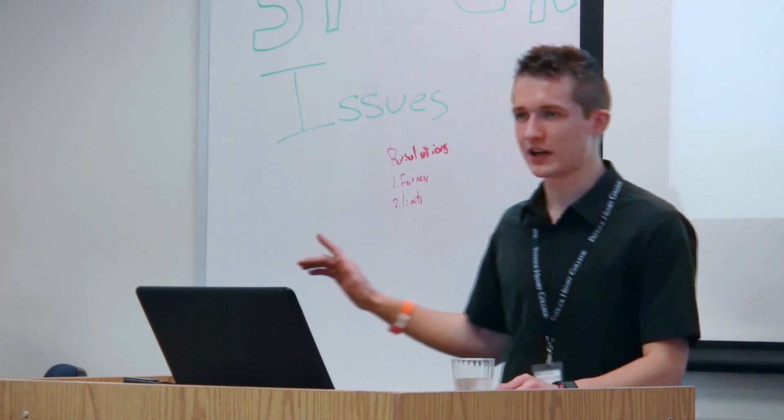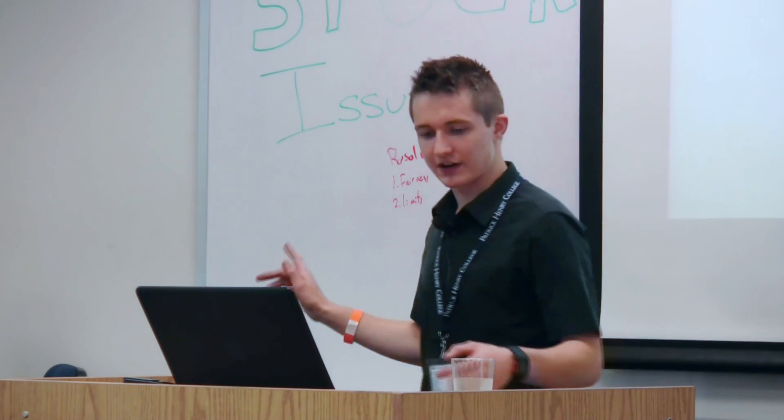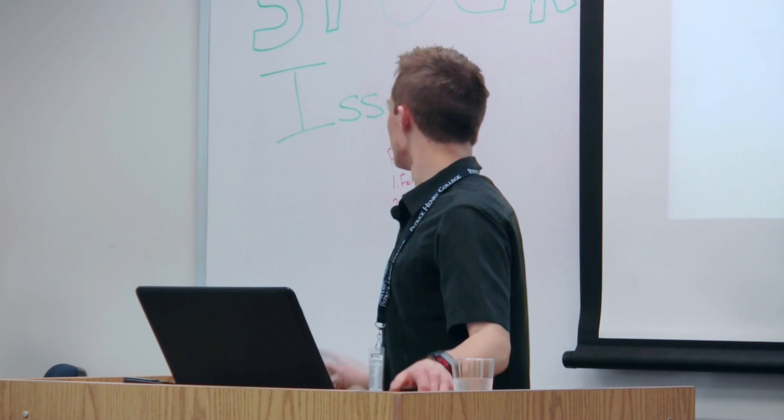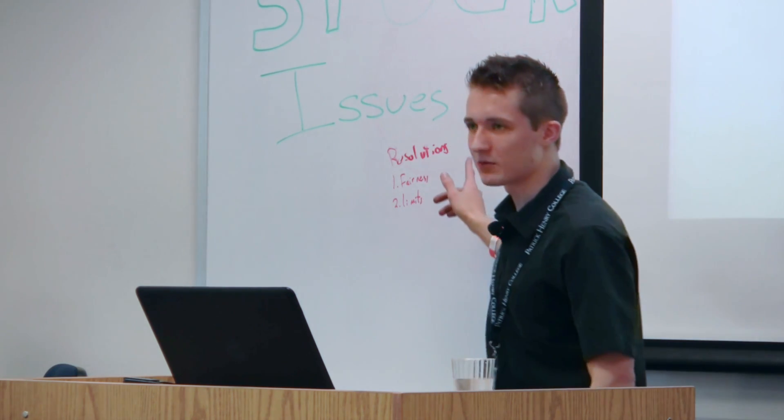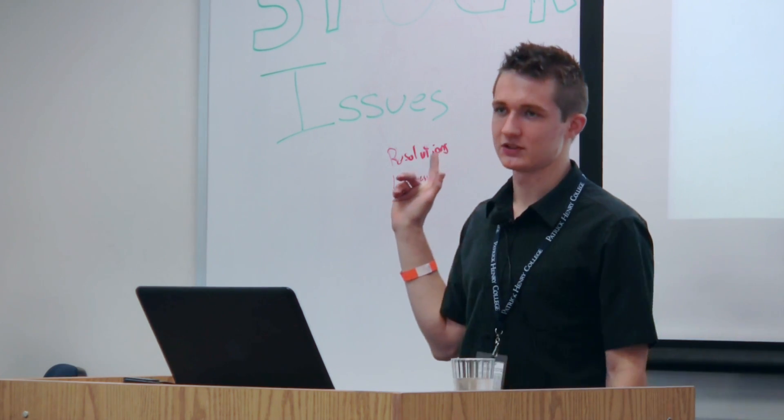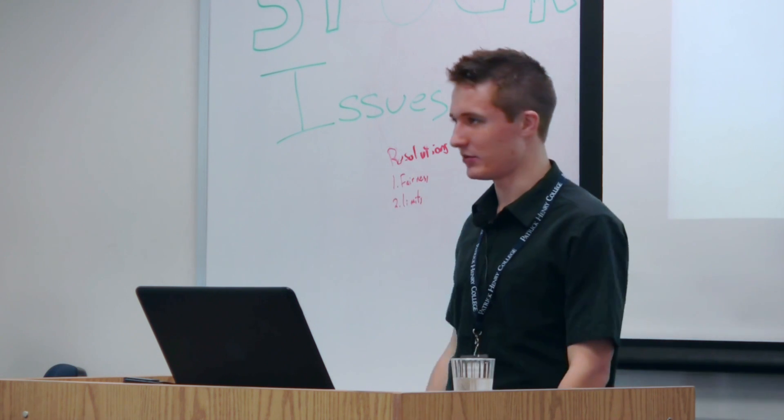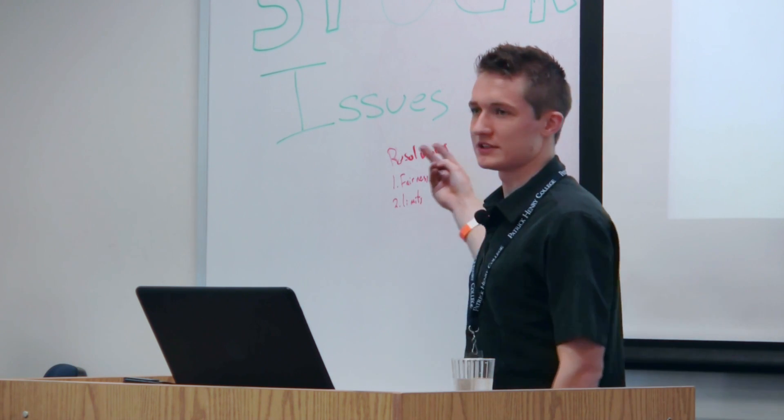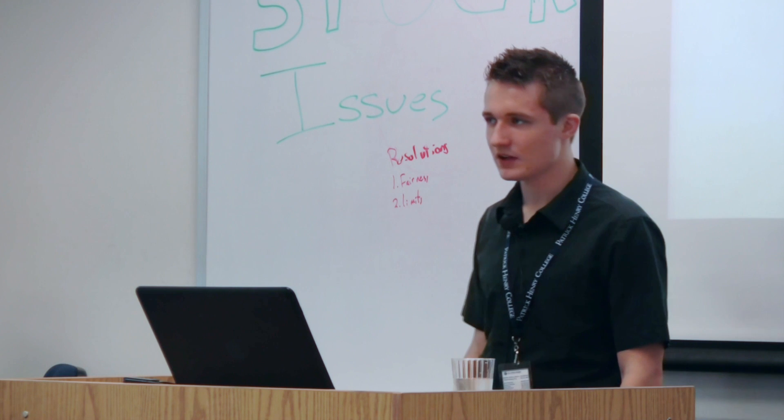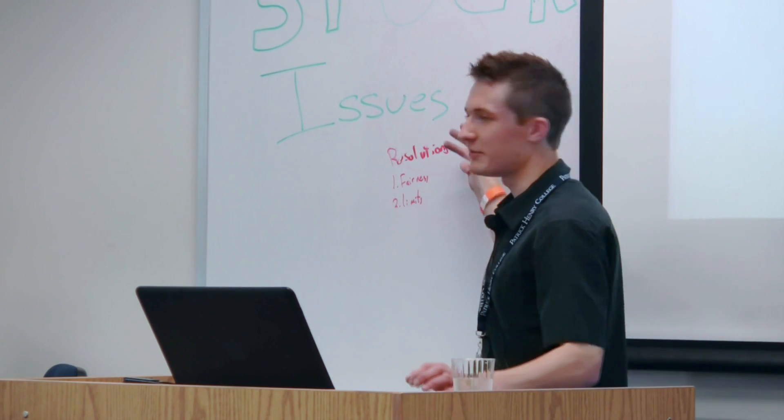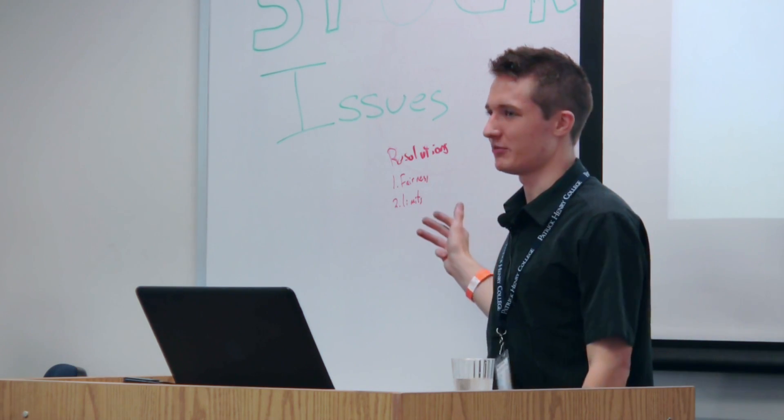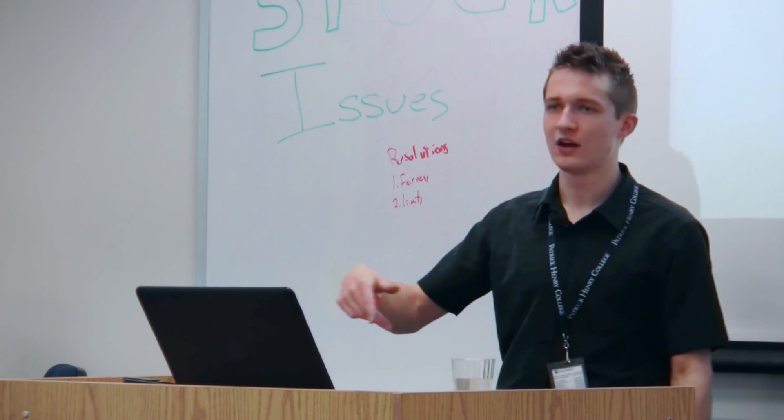So inherency could look at a number of things. You could have your inherency argument against this case, and you could say, first of all, a number of states have systems already, and states have the ability. That could be your second argument. Then you could agree on the facts. I'll move to significance in a second, but you could also say yes, gerrymandering is happening in some instances. And I'll show again a different type of argument significance that would look at that.